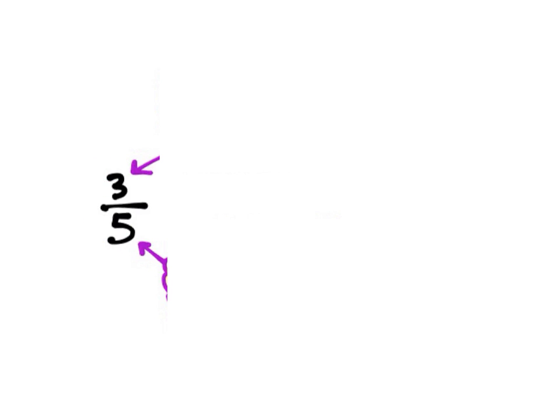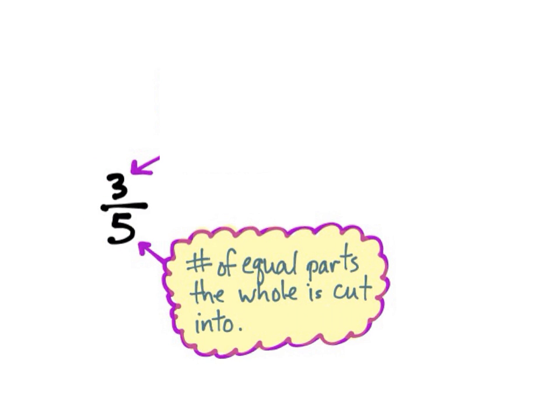I don't know why, it just makes sense to me. But anyway, so what's the denominator? It's the number of equal parts that the whole has been cut into. So this fraction means the whole has been cut into 5 pieces.